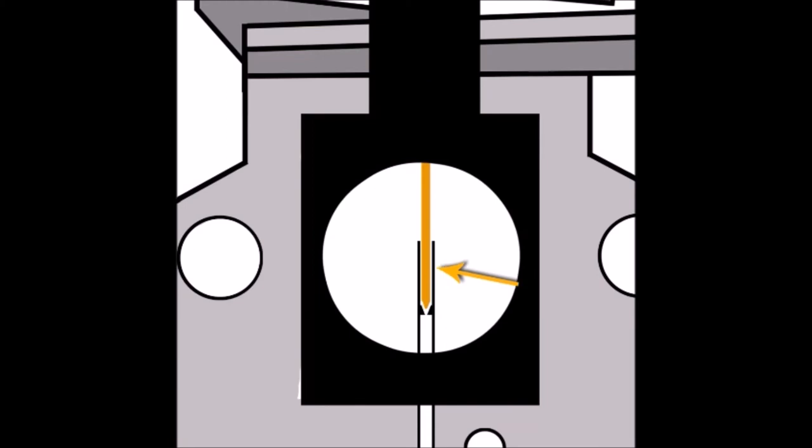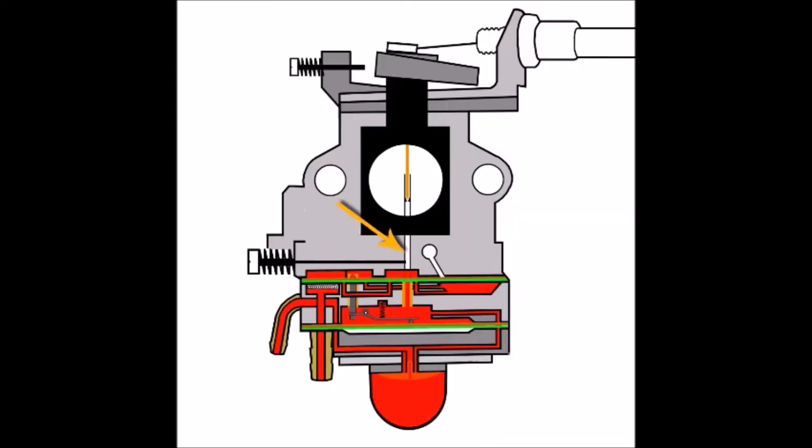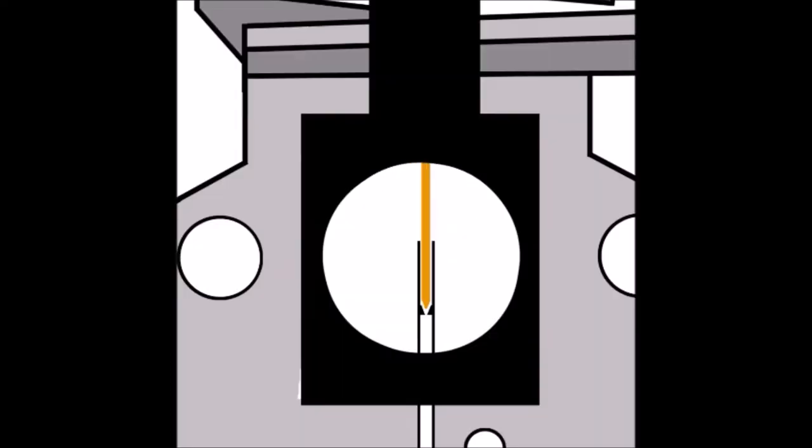It extends right down through the center of the carburetor, right down into the metering area there. Looking a little closer, we can see what appears to be like a little seat for the plunger to sit into. The end of the plunger here is of the same shape as this seat, and at the moment it's in the open position.